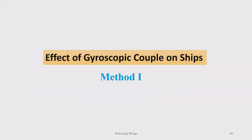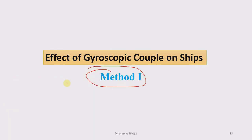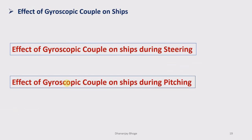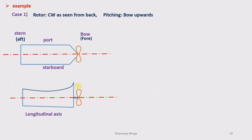Hello friends, we are studying the effect of gyroscopic couple on naval ships using method one. Before watching this lecture, I recommend you to watch the previous lecture on the effect of gyroscopic couple on ships using method one during steering. In this lecture we will see the effect of gyroscopic couple on ships during pitching. Pitching is nothing but the up and down motion of the ship about the axis perpendicular to the vertical plane — when the ship pitches up and down.